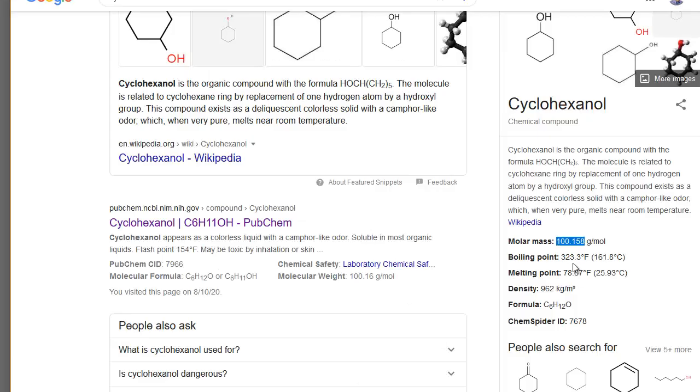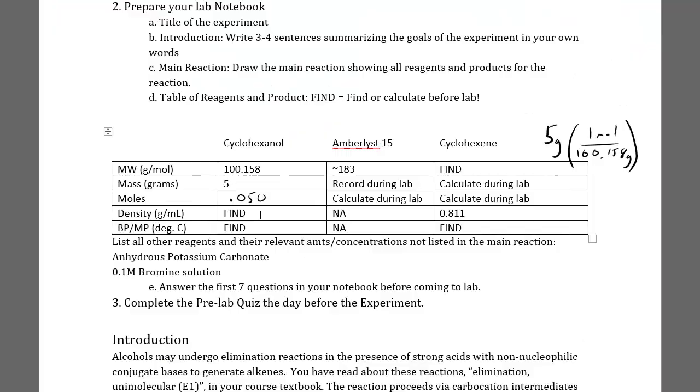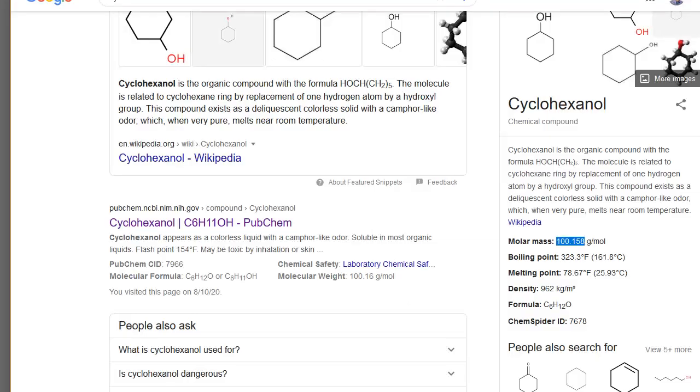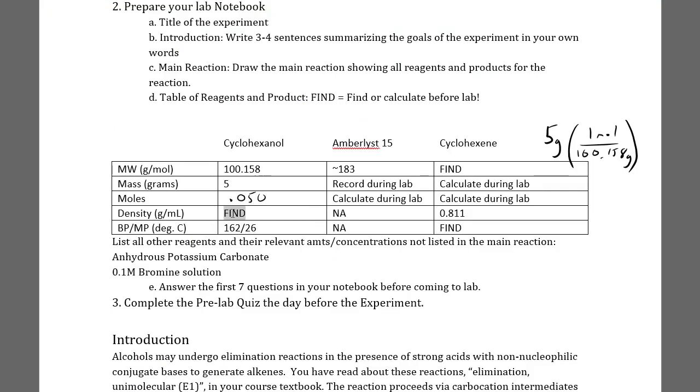So we've got 5 grams and 100.158 grams per 1 mole. Grams cancels, I'm left with moles, about 0.05 moles. This will be useful when we calculate what we need down towards the bottom. The boiling point is 162, the melting point is 26 degrees Celsius. The density is 962 kilograms per meter cubed, which is 0.962 grams per milliliter.